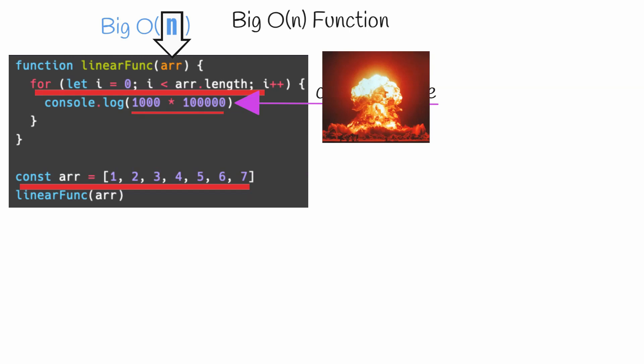This is because if our array were some crazy length like 200 million, changing this expression to something simpler like one plus one would have a negligible effect on the efficiency of the function as a whole. We'd still need to iterate through 200 million items in an array.